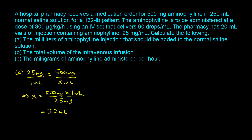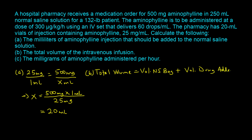For part B, the total volume equals the volume of the normal saline bag plus the volume of drug added. That is 250 milliliters plus the 20 milliliters we calculated in part A, giving a total volume of 270 milliliters.